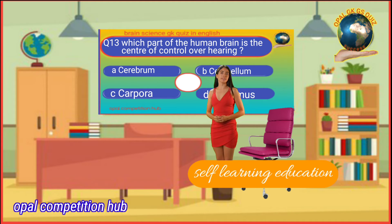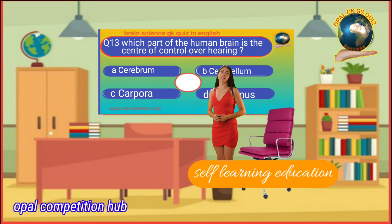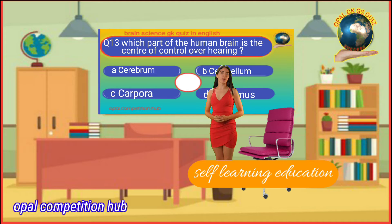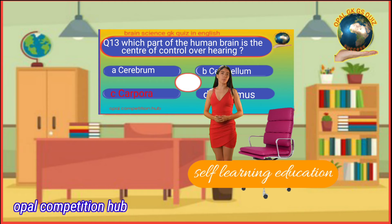Question number 13: Which part of the human brain is the center of control over hearing? Option A: Cerebrum. Option B: Cerebellum. Option C: Corpora. Option D: Thalamus. Your time starts now. Your answer will be Option C: Cerebrum.